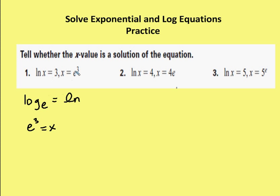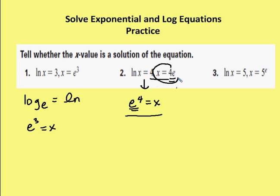x is going to be the value identified here in number one. In number two, I have natural log of x is equal to 4. If I were to rewrite this in exponential form, it would be e to the fourth is equal to x. And we can see that x is not the same in this set of equations. So I know that x is not equal to 4e — it's equal to e to the fourth based on this equation. So the x value given is not a solution of the equation. So in the first one, it is. In the second, it's not.